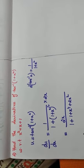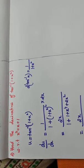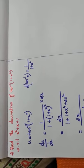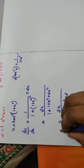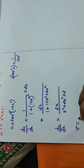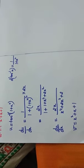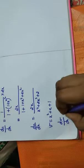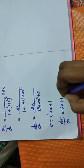So our du/dx = 2x divided by (x⁴ + 2x² + 2). Now my v = x² + x + 1. Differentiating with respect to x: dv/dx = 2x + 1.